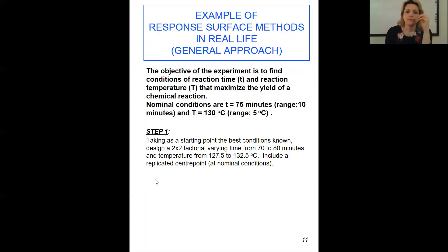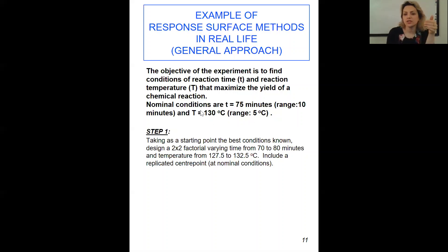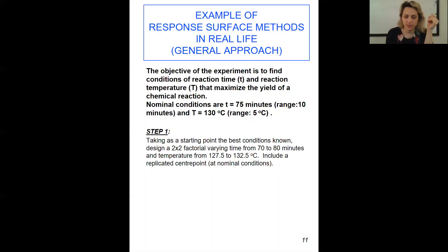Step one: taking as a starting point the best condition known, you want to design a two-by-two factorial — the same as two-power-two factorial — varying time from 70 to 80 minutes and temperature from 127.5 to 132.5 degrees. We added just this range to the two parts of it. We said the range is five, so the nominal condition is like the center point for us. When you want to develop your design of experiment, go to the response surface method.